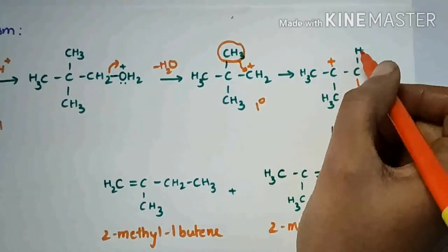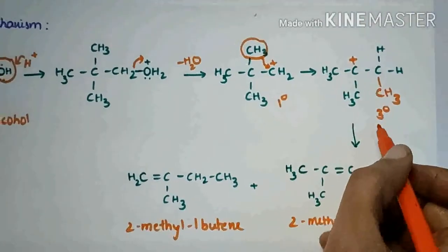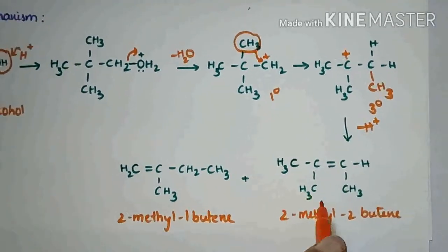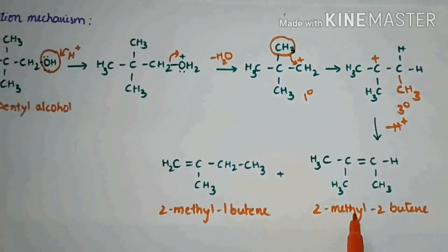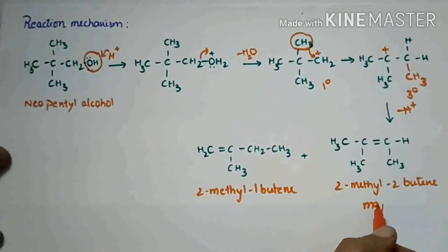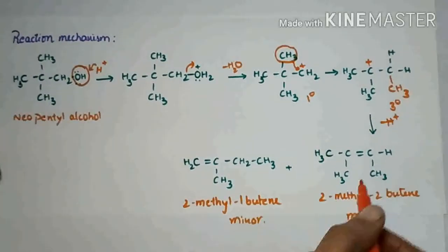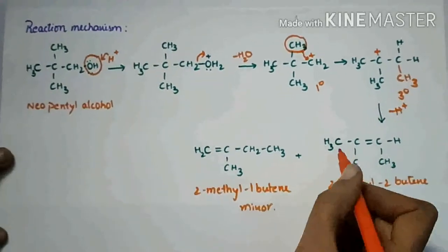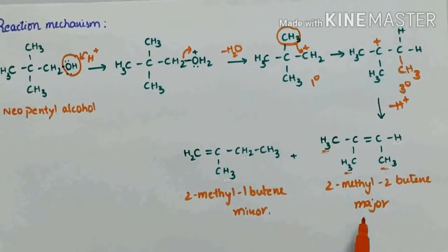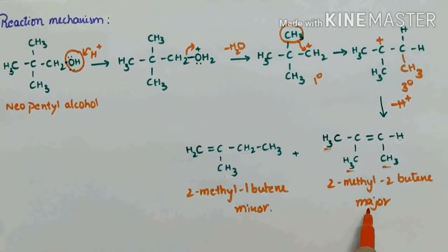On the adjacent carbon atoms — here three hydrogens are there and here one hydrogen is there — any one of them will be deprotonated and it will form a mixture of olefins. One is the major product and one is the minor product. Because in this compound, nine alpha hydrogens are there, so it is more stable and it is the major product.